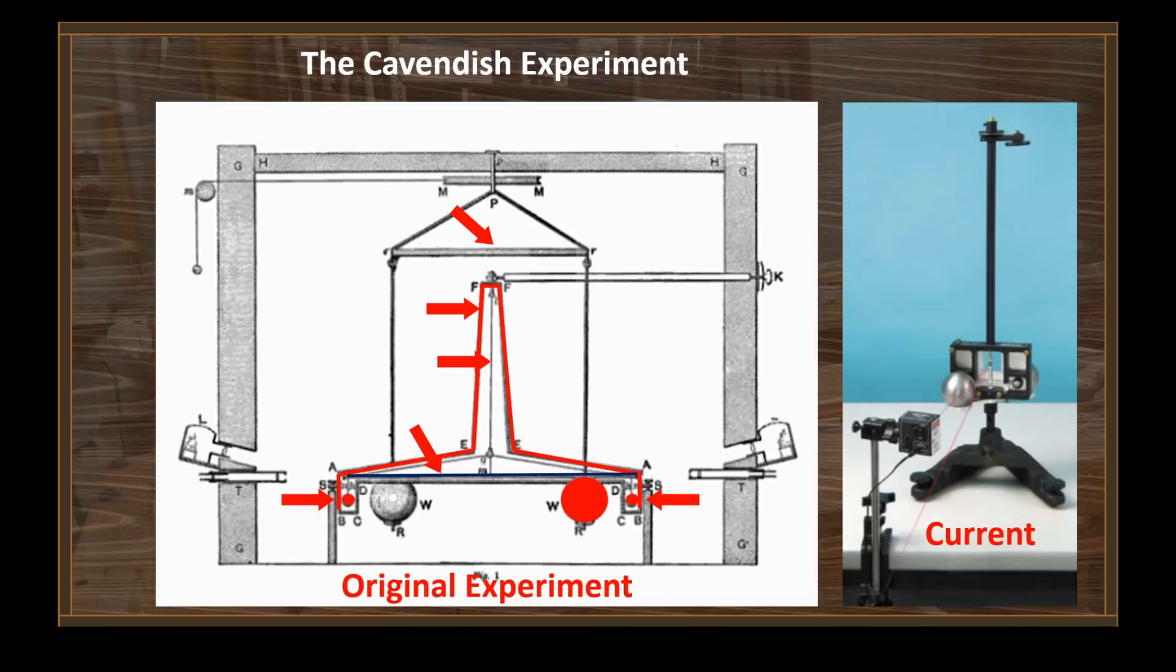Now Cavendish was able to measure the amount of that attraction through a pair of telescopes that he had mounted that looked through glass windows. But not only could he measure the amount of deflection of the large masses in proximity to the small masses, he could also measure the vibration period, because this torsion balance acts like a horizontal pendulum. So knowing the amount of deflection and the period of oscillation, Cavendish could then relate the density of the large mass to the density of the earth. It's really a very ingenious experiment.